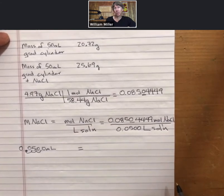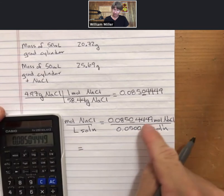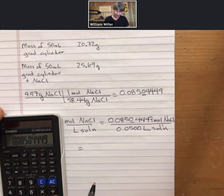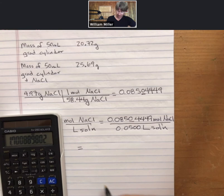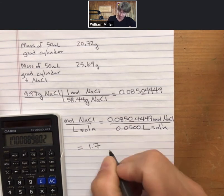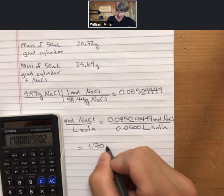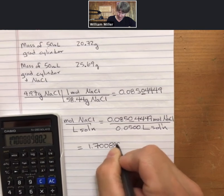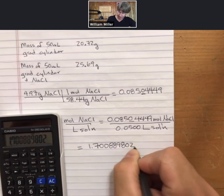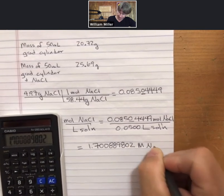Now do the math. So I still have my number for my numerator, my denominator, divided by 0.0500, although the calculator could just be 0.05. I get 1.700889802. That's molarity of sodium chloride.